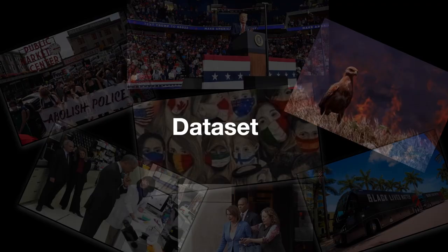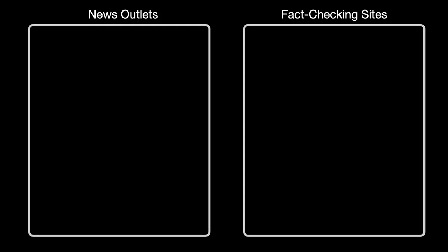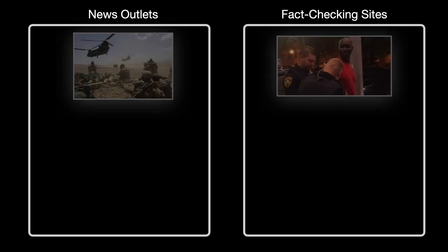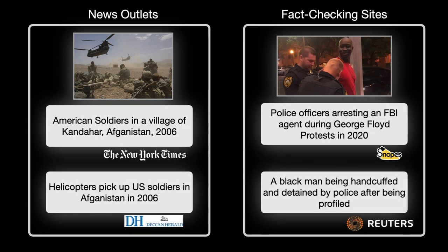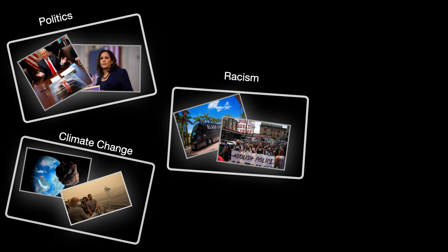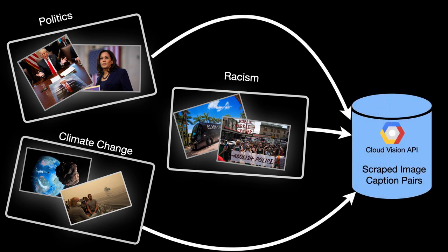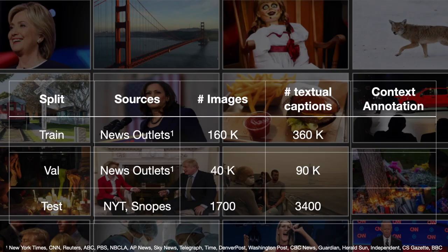To train our method, we first create a new large-scale dataset. We scrape images from two primary sources: news outlets and fact-checking websites. Each image in our dataset is associated with several captions. We use the Google Cloud Vision API to download images with corresponding captions from several news sources, with a focus on topics where misinformation spread is prominent. Overall, we obtain a large training set with hundreds of thousands of images and captions.